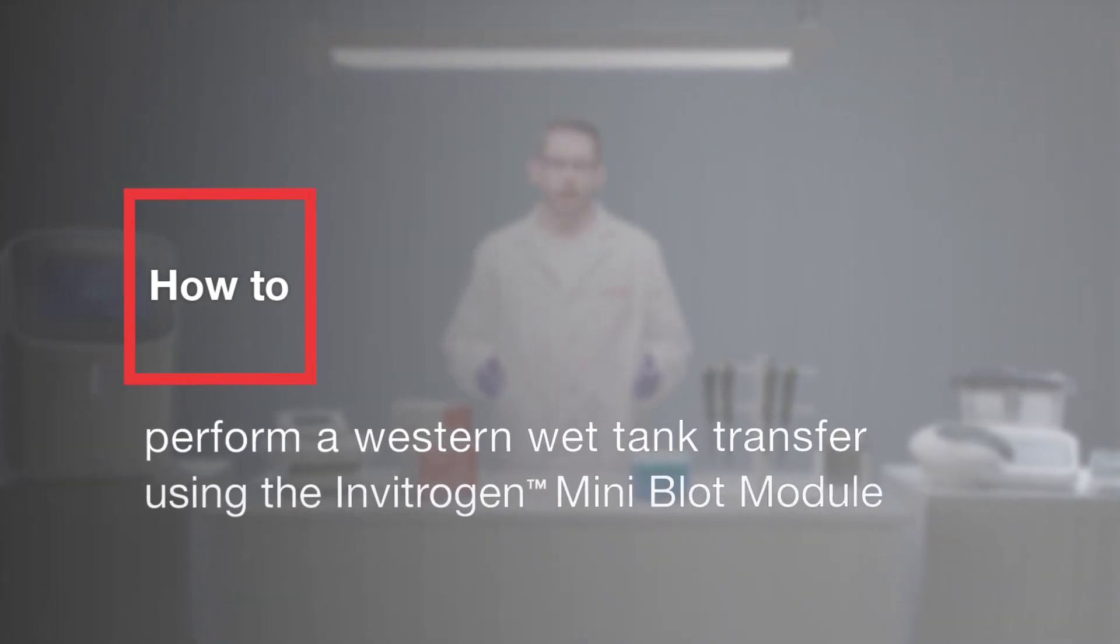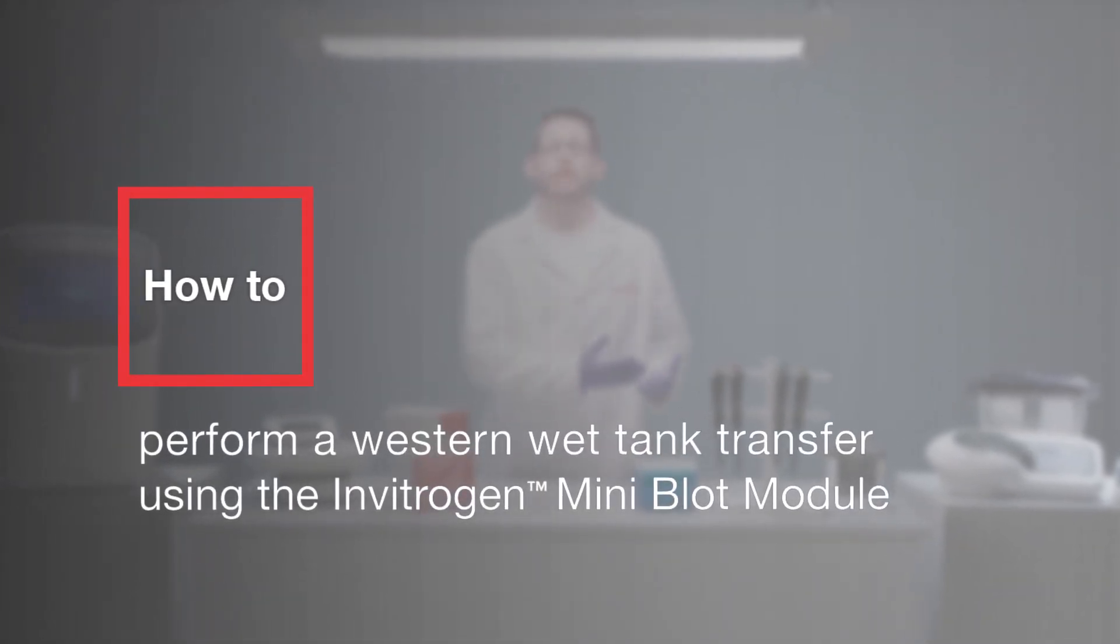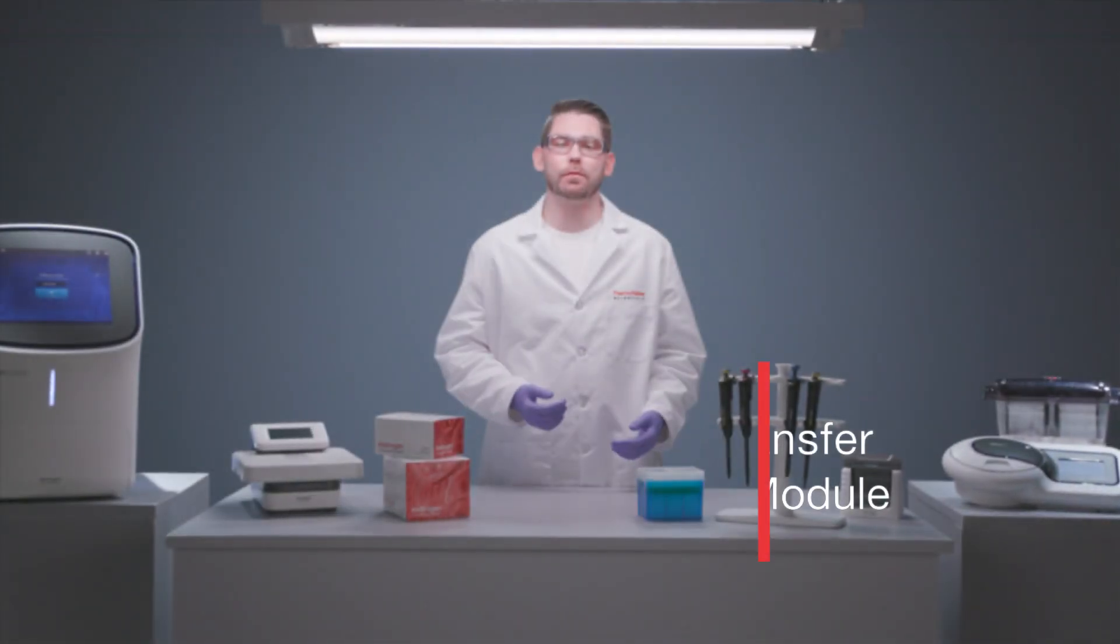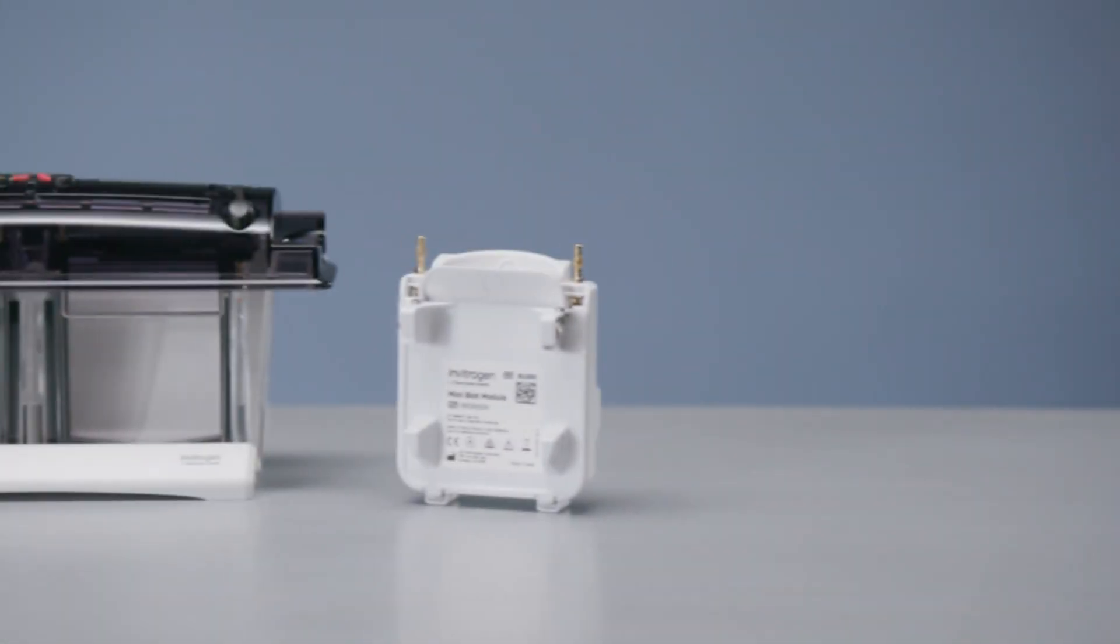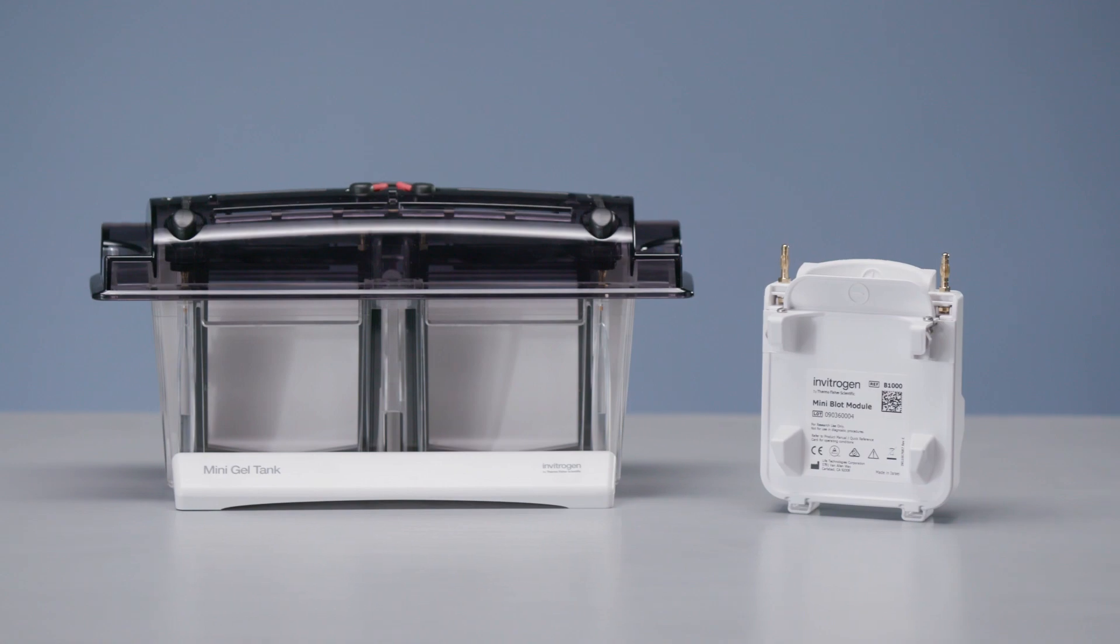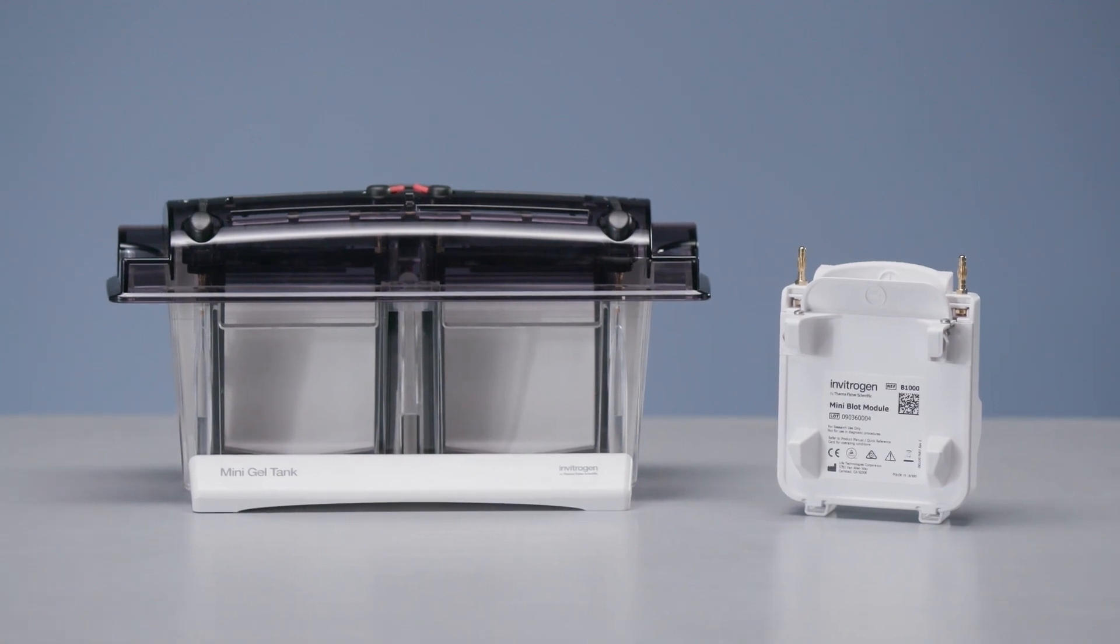Once the proteins have been separated in the gel, they can now be transferred to a solid support membrane to start the western blotting workflow. In this video, you'll learn how to perform a western transfer using the mini blot module in a mini gel tank.